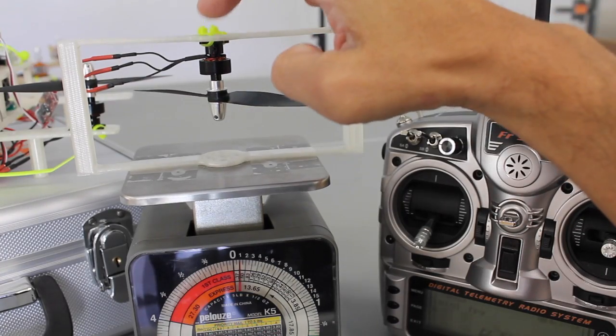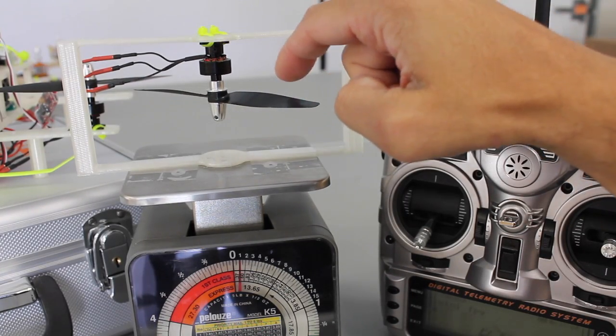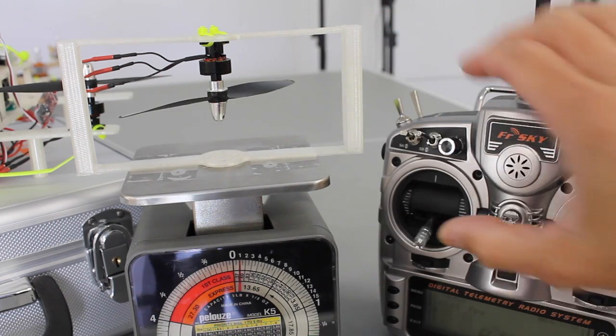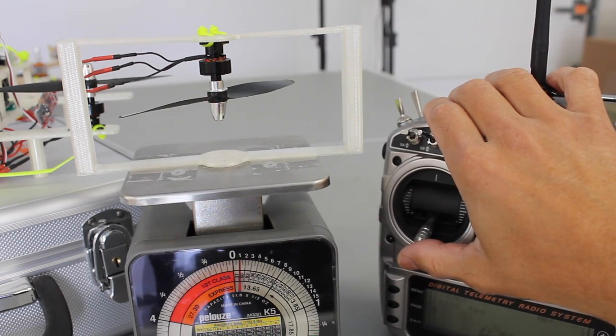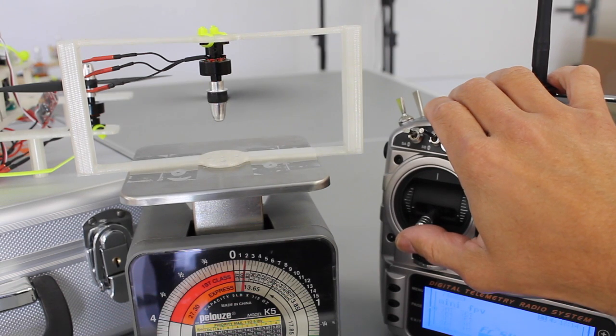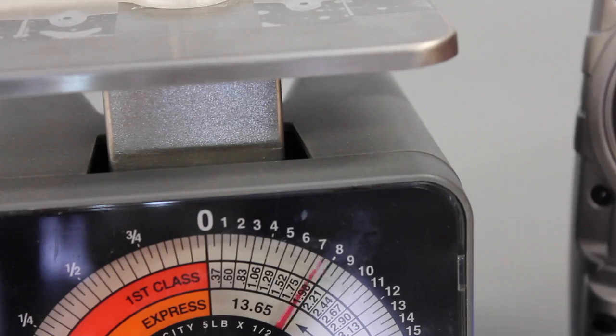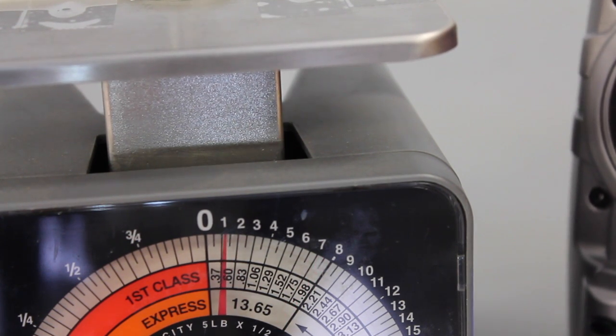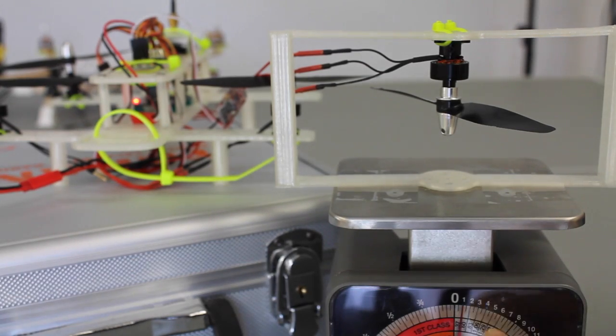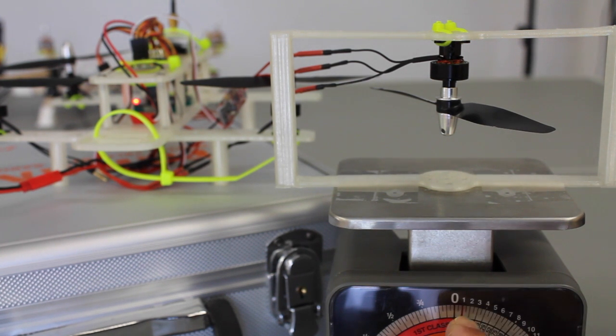Okay, so here we are with the prop inverted spinning in the proper direction. Let's go ahead and do this test. I'm going to throttle up. Wow, that put us at about seven and a half ounces.